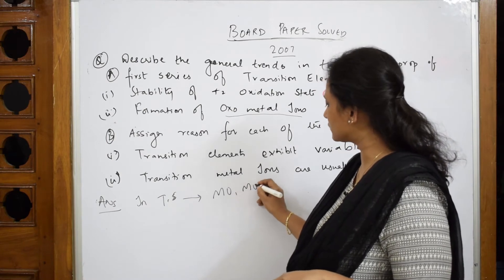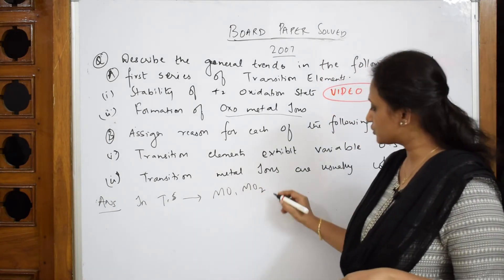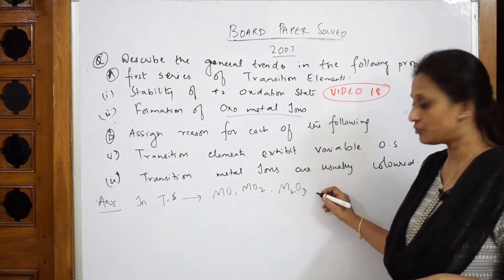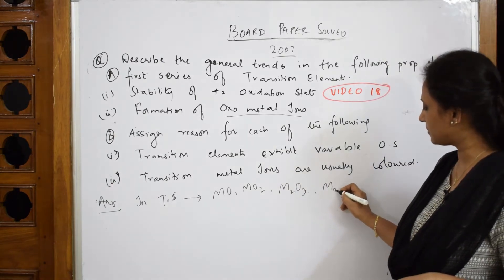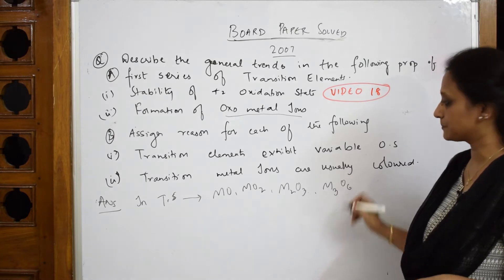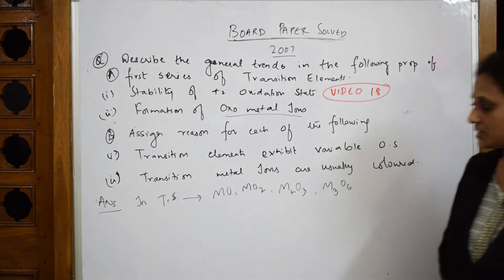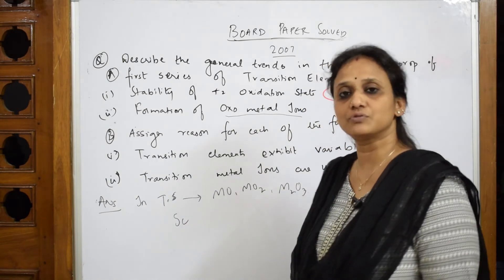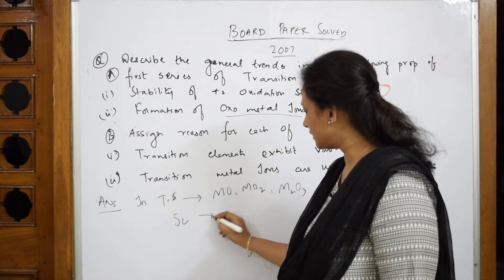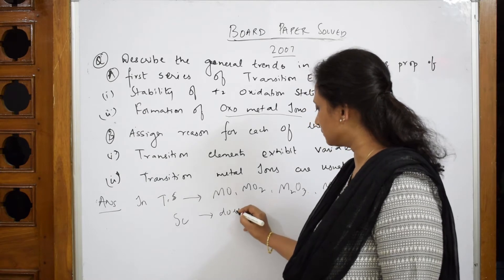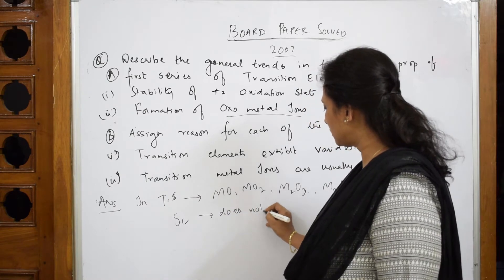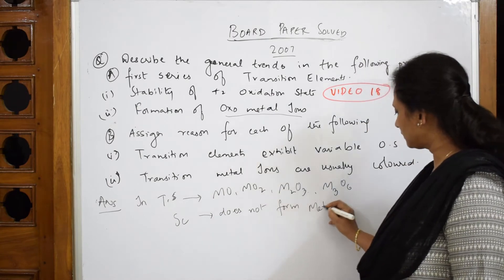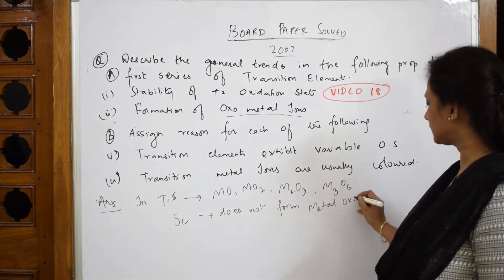It is also going to form metal oxides of type MO2, M2O3, and M3O6. Such are the different combinations. But importantly, scandium — because of its configuration 3d¹4s² — does not form metal oxides. Remember this. This is one important thing.